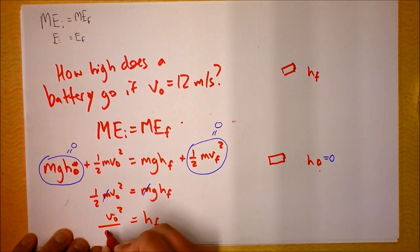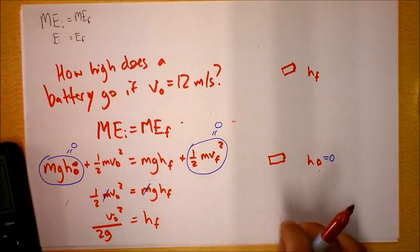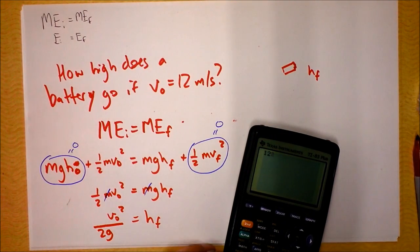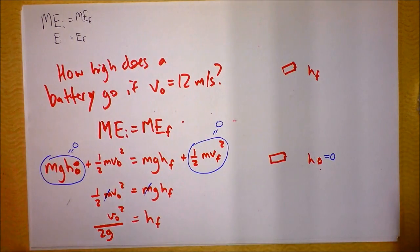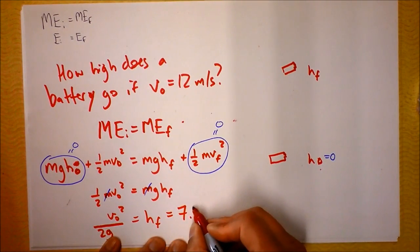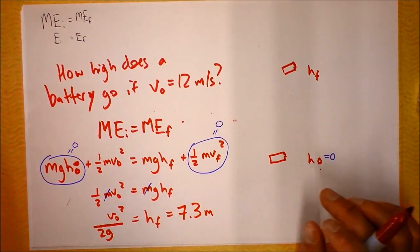So we can calculate that. Let's get our trusty calculator out. We'll take the initial velocity and square it and divide by 2 times 9.81 meters per second squared, and I get 7.34 meters, that is 7.3 meters up.